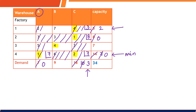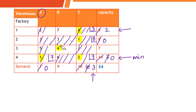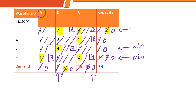We are now left with two cells: one with cost 4 and one with cost 7. The minimum is 4, so we start allocation there. Between the remaining demand of 9 and the remaining capacity of 7, the minimum is 7, so we supply 7 units and that capacity becomes 0. The only cell remaining has demand 2 and capacity 2, so we allocate 2 units. Both demand and capacity become 0 — allocation is complete.